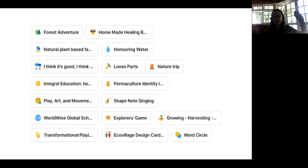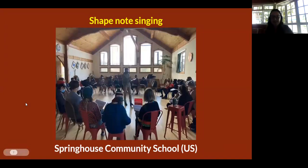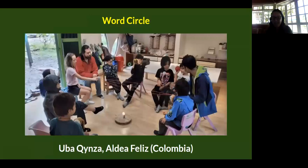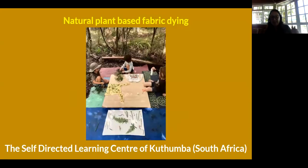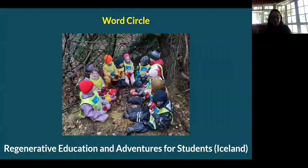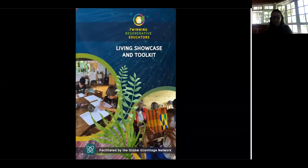I'll share one activity per region to give you a little taste. From Spring House in the United States, we have Shape Note Singing. From Aldea Feliz in Colombia, we have the Word Circle. From Regenerative Education and Adventures for Students in Iceland, we have the Forest Tree. From the Self-Directed Learning community at Kathumba Eco Village in South Africa, we have Natural Plant-Based Fabric Dyeing. And from the Regenerative Educators, we have the Word Circle. All of this will be available in a printable brochure that our designer Camila is still working on, and also live via the link we will share with you.